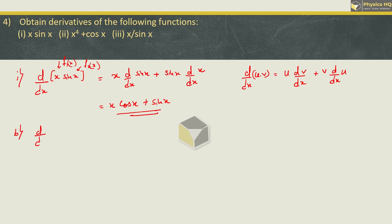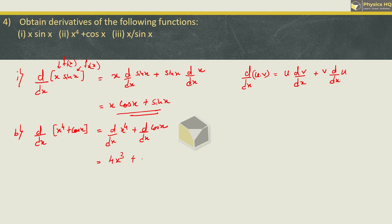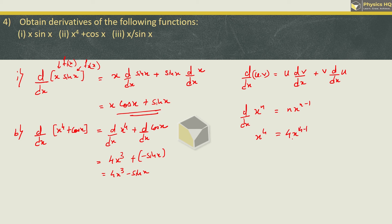Second derivative: derivative of x raised to 4 plus cos x. Here there are two terms separated by a plus sign, so we can take their derivatives separately. It is derivative of x raised to 4 plus derivative of cos x. x raised to 4 gives 4x raised to 3, and derivative of cos x gives minus sin x. So we got 4x cubed minus sin x.